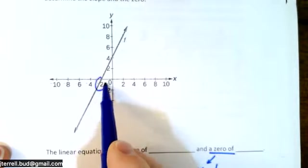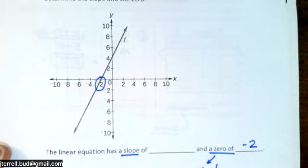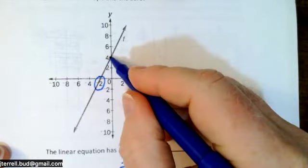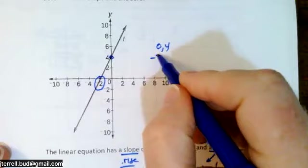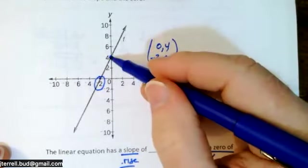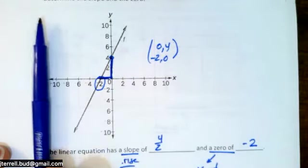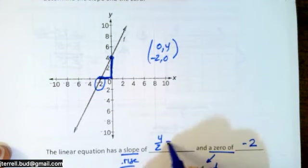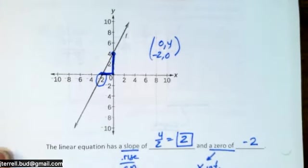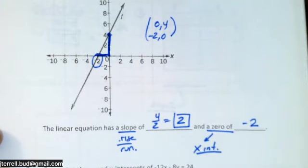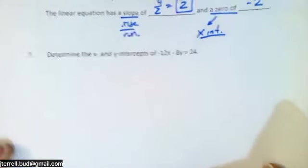Number six gives a graph and asks for the slope and the zeros. The zero is the x-intercept — where the line crosses the x-axis. It crosses at x equals negative 2, so the zero is (negative 2, 0). For the slope, use the points (0, 4) and (negative 2, 0): rise of 4 over run of 2 equals 2. It's positive because going left to right the line moves up. So the slope is 2 and the zero is negative 2.